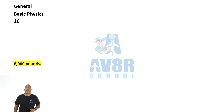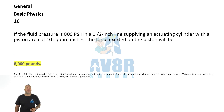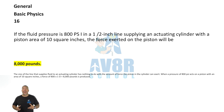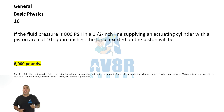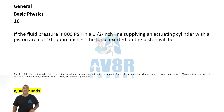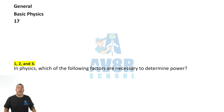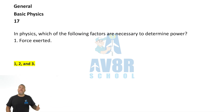Number 16. Eight thousand pounds. If the fluid pressure is 800 psi with a half-inch line supplying an actuating cylinder with a piston area of 10 square inches, the force exerted on the piston will be 8,000 pounds.